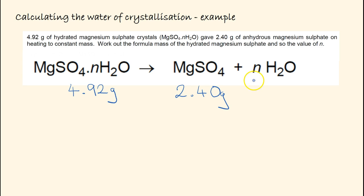The mass of water must be the difference between these two numbers. So it's 4.92 minus 2.40, giving us 2.52 grams of H2O.